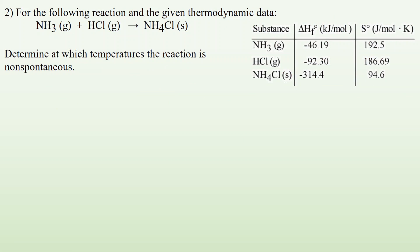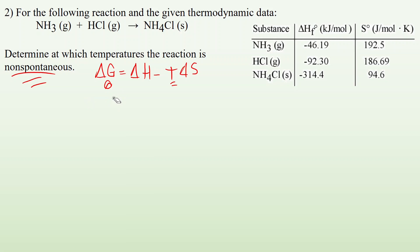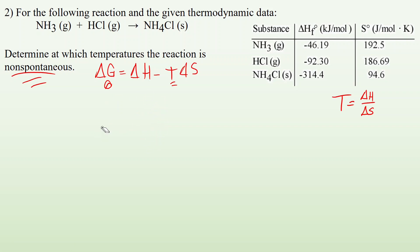Number two: for the following reaction and given thermodynamic data, determine at which temperature the reaction is non-spontaneous. We want to solve delta G equals delta H minus T·delta S for temperature. The transition from negative to positive delta G happens right at zero, so we set delta G equal to zero. This gives us T·delta S equals delta H, and dividing each side by delta S, temperature equals delta H divided by delta S.